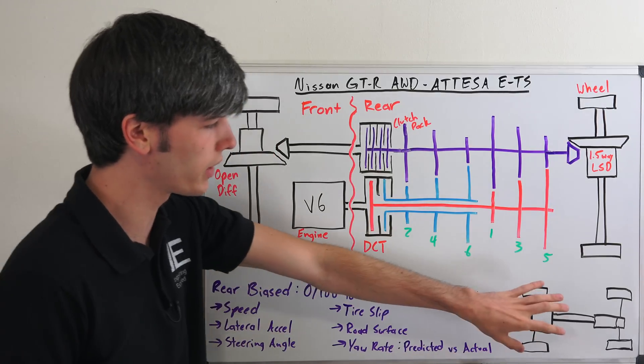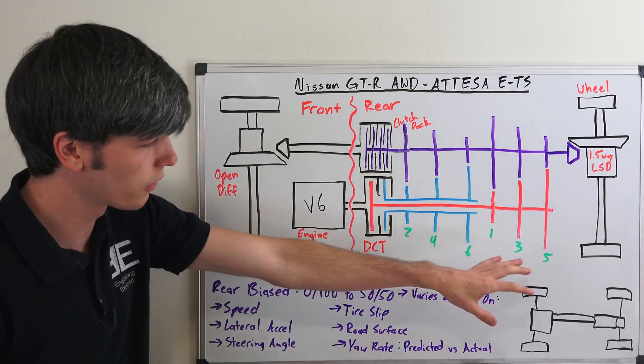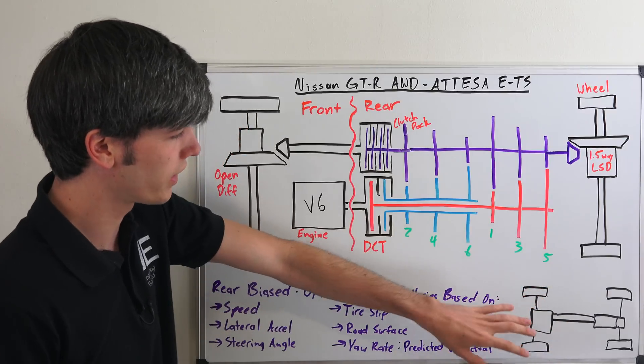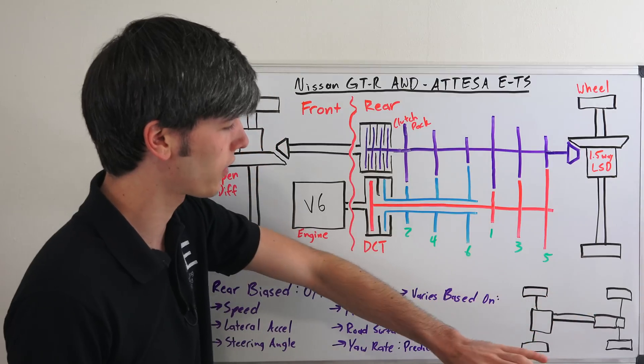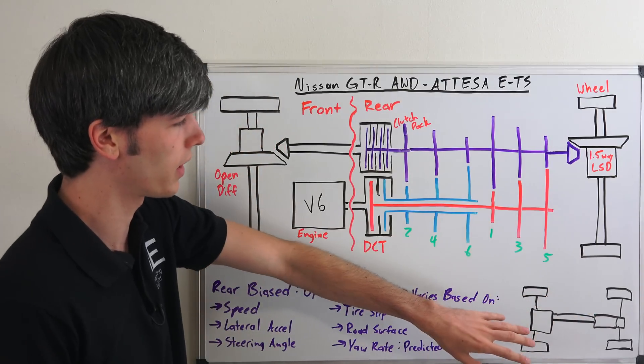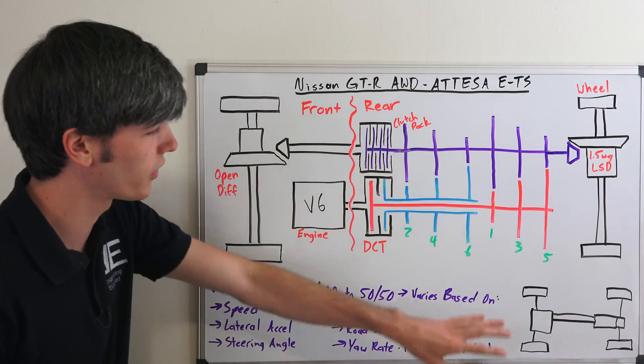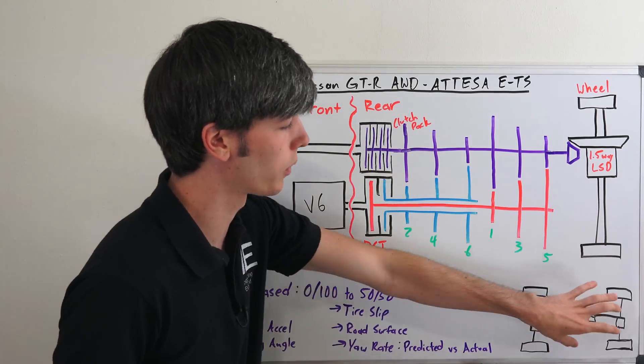And so if you put the right number of words in order, this is the first of its kind. So like front engine, rear transaxle, independent, all-wheel drive, rear biased something or another system.